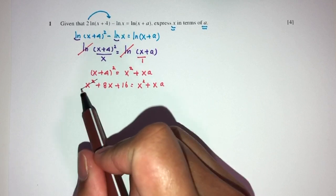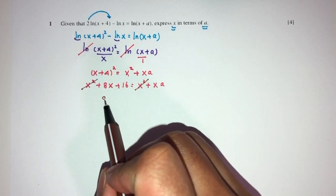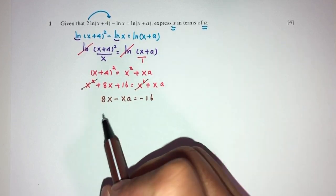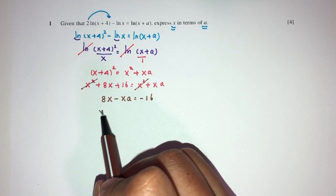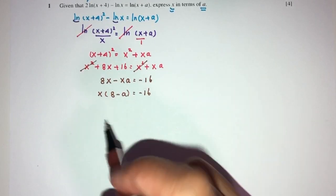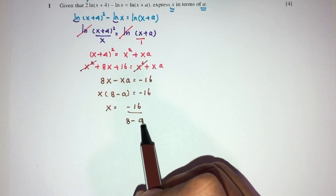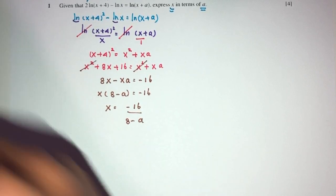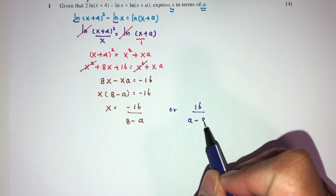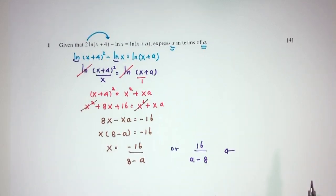This and this will cancel out. If I bring all the x on one side, you will have 8x minus xA equals minus 16. Factorize x now: x times 8 minus A equals minus 16. So x will be minus 16 over 8 minus A, or you can write 16 over A minus 8. This is your question number 1.